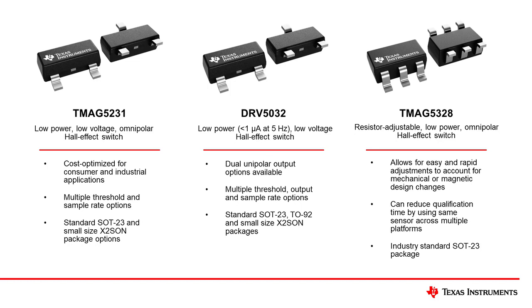Hall-effect switches are the best devices for solving these design challenges. All three of these solutions are low power, low voltage devices, but each one has a different system level benefit. The TMAG5231 is designed to optimize total system cost for battery-operated consumer and industrial applications. The DRV5032 has dual unipolar output devices available, as well as multiple threshold and sample rate options. The TMAG5328 has a resistor-adjustable BOP from 2 mT to 15 mT for quick prototyping with a single sensor.